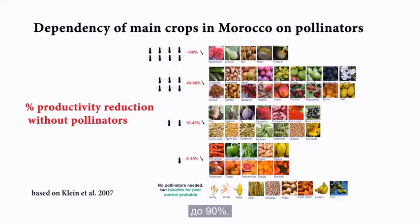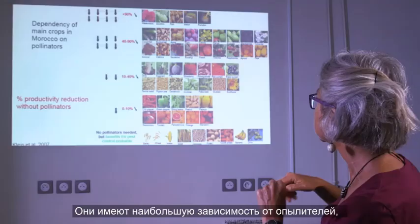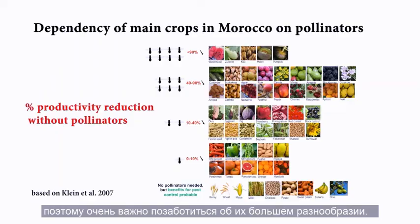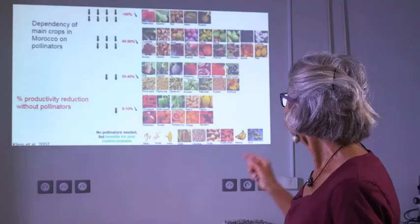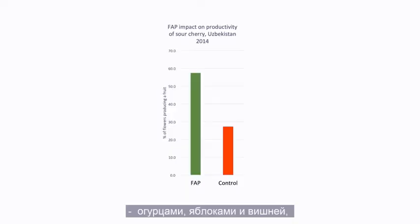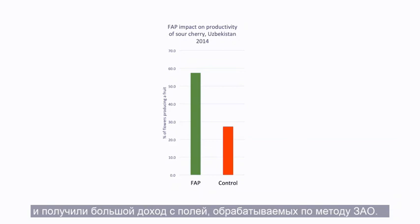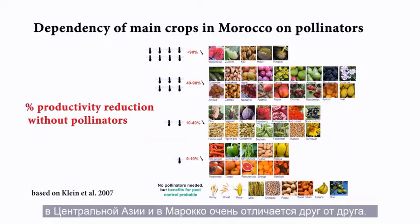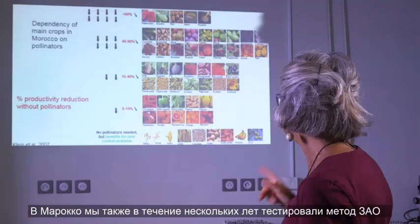For instance, if you want to grow melon, watermelon, zucchini, or pumpkin — they have the highest dependency on pollinators — it is very important to take care that you will have high pollinator diversity. You can use the FAB approach and enhance your yields. We did trials in Morocco also with several crops from the second group — cucumber, apple, and cherry — and had high income increase from FAB fields. We also did cucumber and cherry in Uzbekistan, and from that experience we know that FAB is truly replicable across continents, because the pollinator diversity in Central Asia and in Morocco is very different.